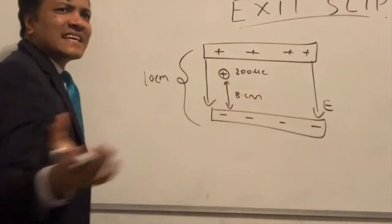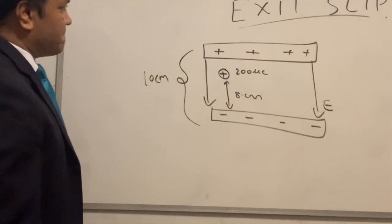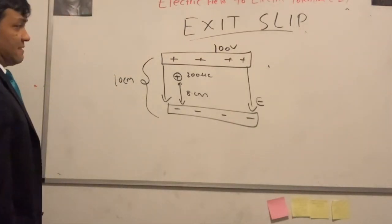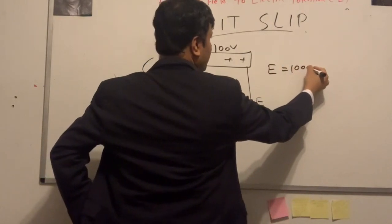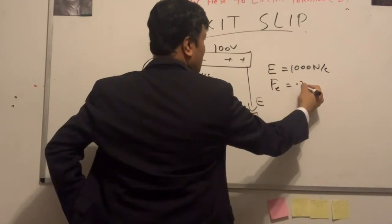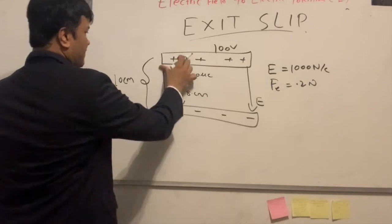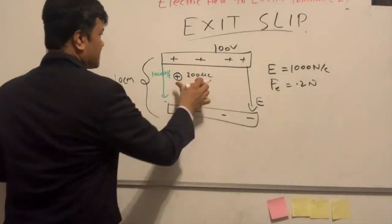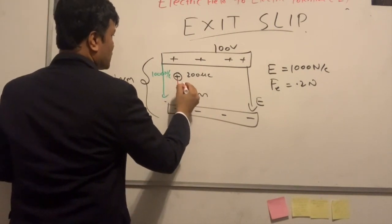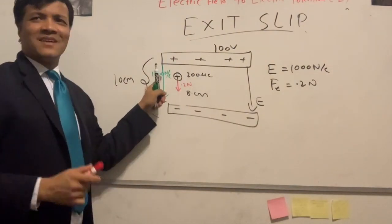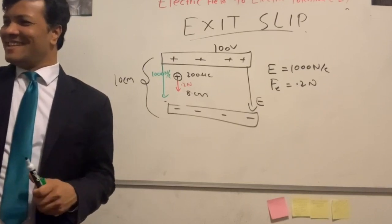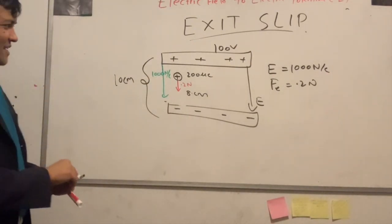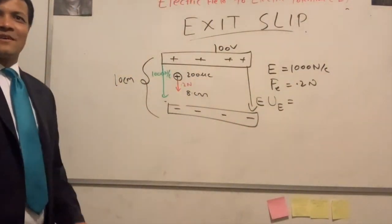We already know the electric field is 1000 N/C and the electric force is 0.2 newtons directed downward. Now find the electric potential energy. Remember, E = V/d and force = 0.2 N. The green arrow for field is bigger than the red arrow for force.